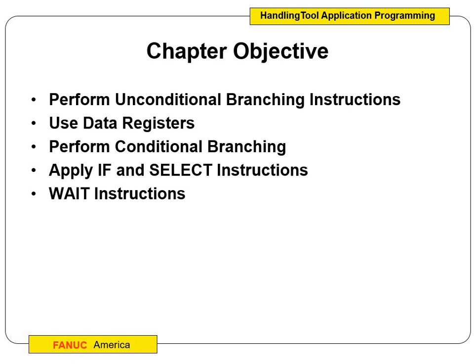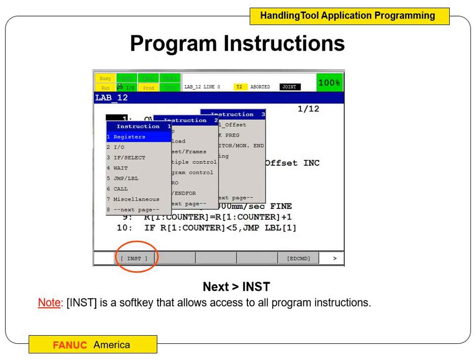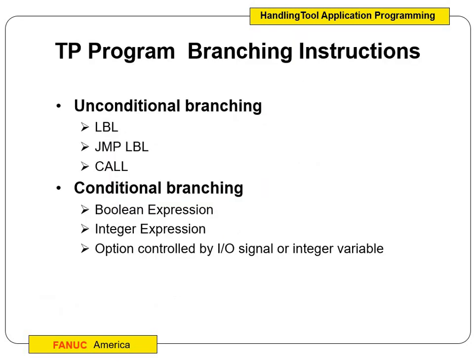A lot of this is going to apply to the large robot in the classroom because we're going to use call-outs. When you're in the main screen writing your program — where you can hit point, shift and point right, or shift and touch up — if you hit next, just like in the last lecture, you go to the edit commands on the right-hand side. On the left-hand side you can see INST for instructions. This is where we insert all our different instructions: registers, IOs (input and output), if/select statements, waits, jump labels, and call-outs.